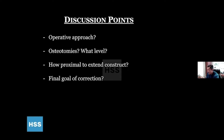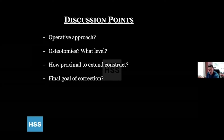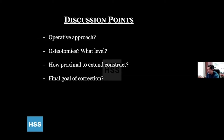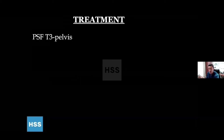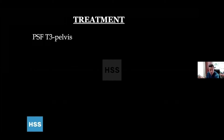For the sake of time, I'll move on. We decided to do a T3 to pelvis operation. This is a typical case we do for these types of operations. We gave her about 2.5 liters of crystalloid. It was about a 4 to 4.5-hour surgery with just about a liter of blood loss.